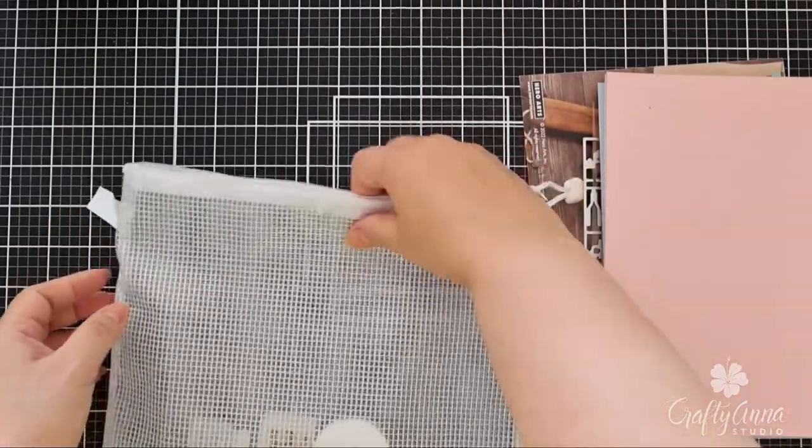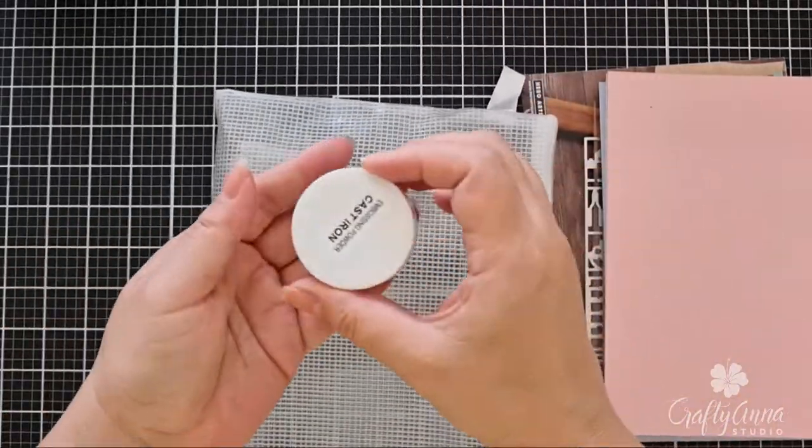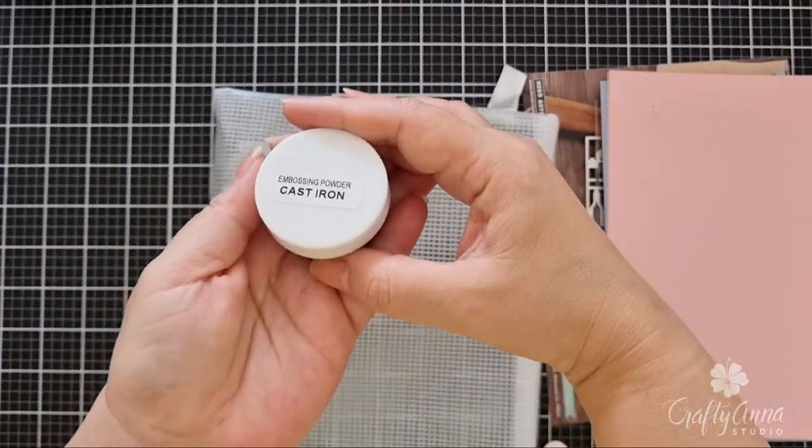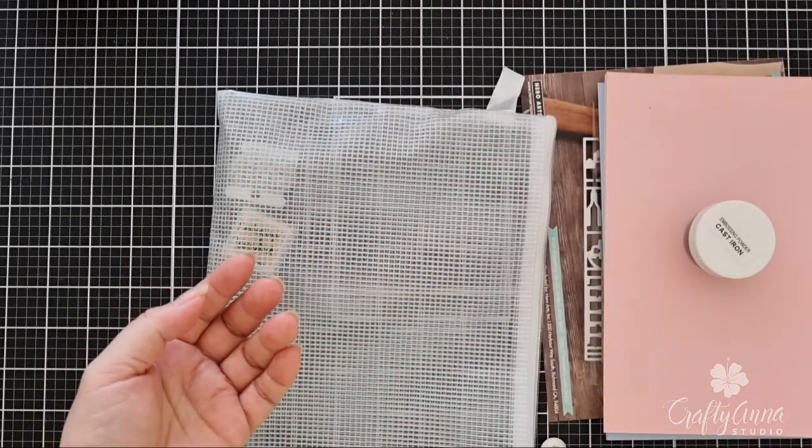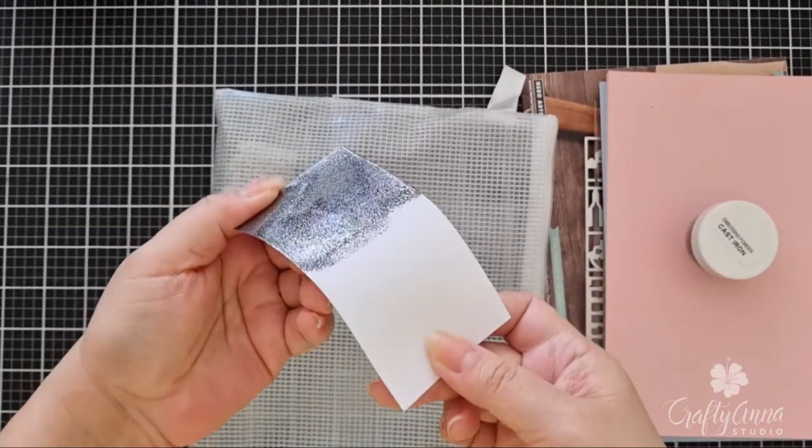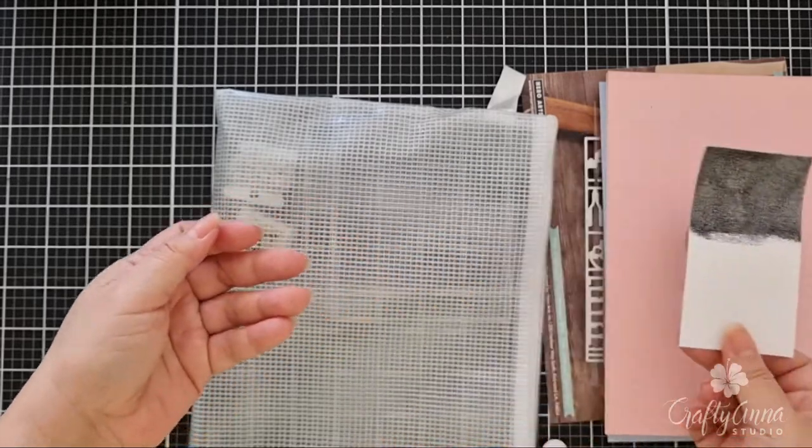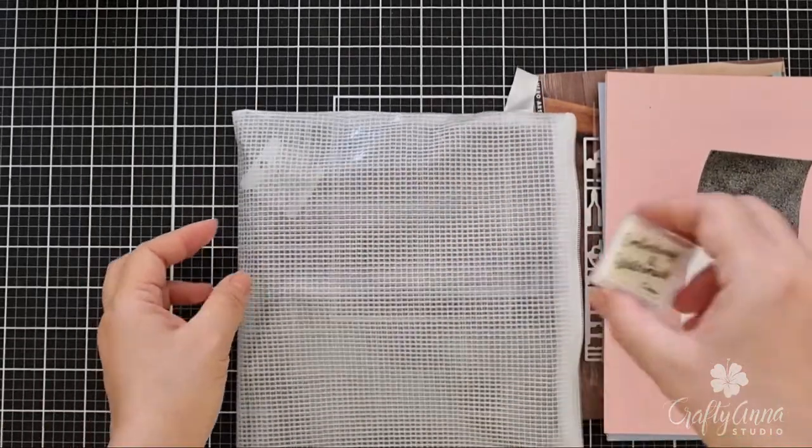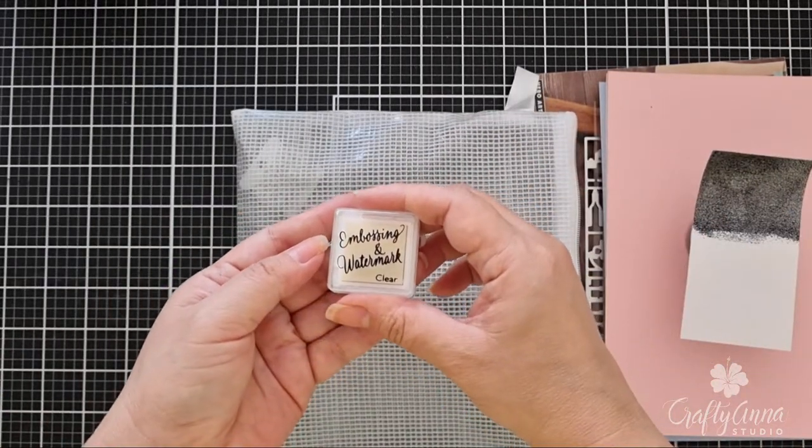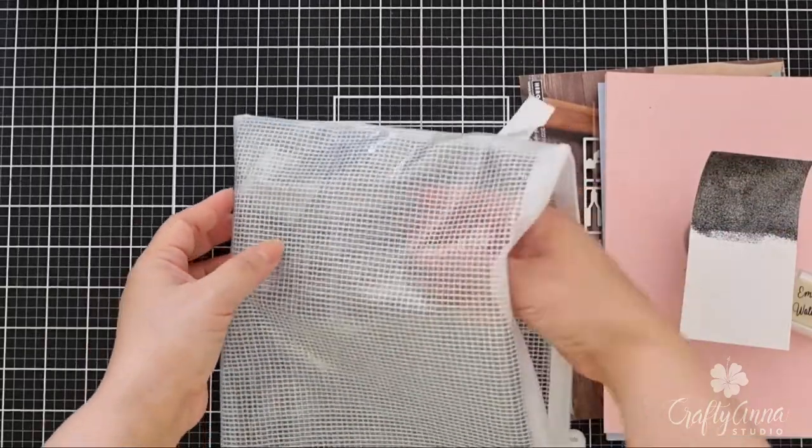There is also cast iron embossing powder. I embossed it on a piece of scrap paper to show you what it looks like. They also include a cube of embossing and watermark ink. Last but not least, 10 yards of white and blue baker's twine.